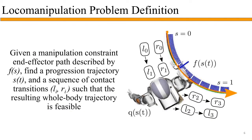To make the problem tractable, we reformulate the problem of local manipulation as follows. Given a manipulation constraint end-effector path described by f of s — this orange line — where s is from 0 to 1, we want to find a progression trajectory s of t, meaning how we should progress along this path, and a sequence of contact transitions so that the resulting whole-body trajectory is feasible.